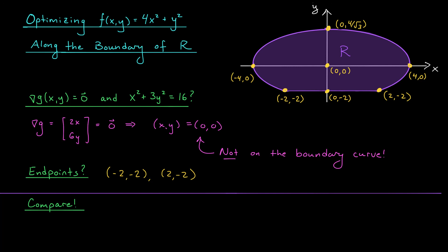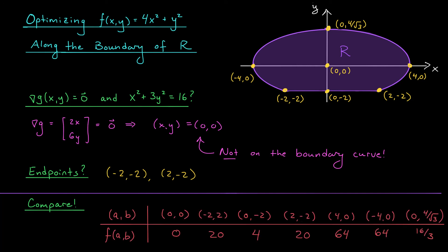Okay, so to summarize, we have identified six points along the boundary as candidates for our global max and min, as well as the single critical point of f located at the origin. By plugging each of these points into the function f and comparing the outputs, we see that f is largest on R at the points (±4, 0), giving us a global max of 64, and f is smallest on R at the point (0, 0), giving us a global min of zero.